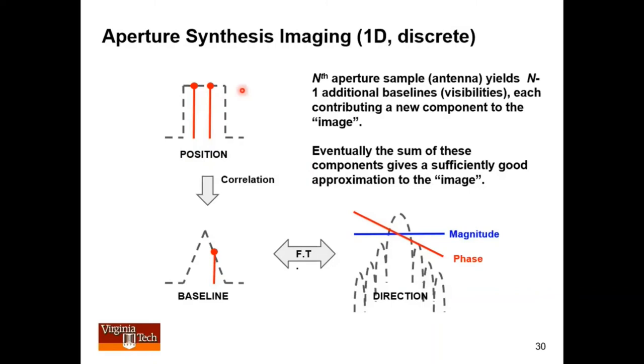And then as you add a third one, you get two additional baselines. That means you get two more samples here, which means now you have three contributions here, each with a different magnitude and a different phase slope. And as you continue to populate or you continue to sample this aperture, you get more and more of these things adding up. And if you add up enough of them, eventually you get some facsimile of the image. And that's what aperture synthesis imaging is.